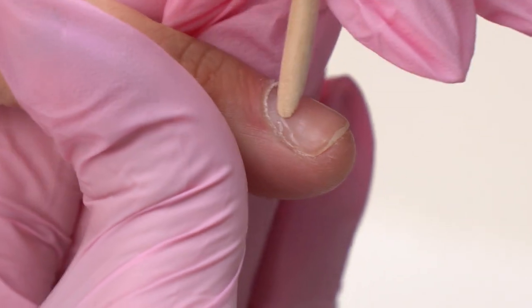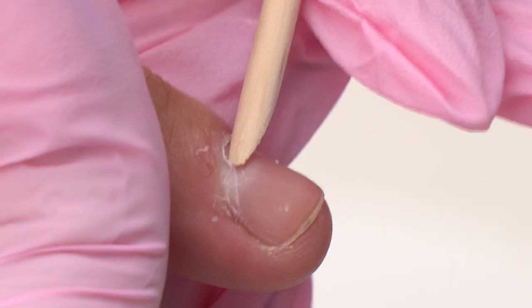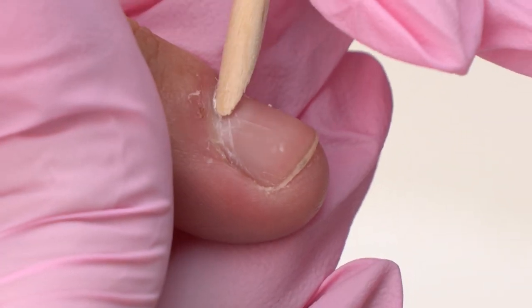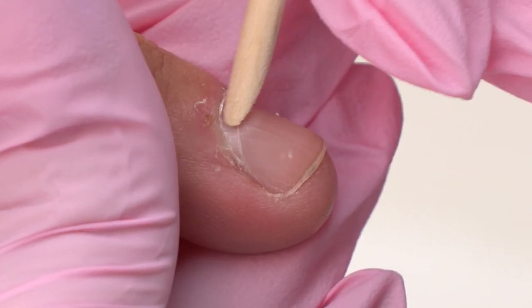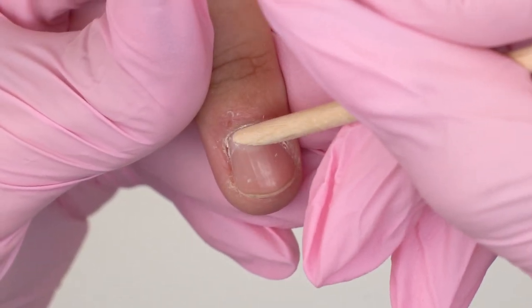We should be careful and choose a particular technique. For instance, if we use a blue drill bit to lift up the cuticle, we can cut the skin in the sinuses. And using nippers or scissors wrong, we can also cut it. So it's a nuanced case.